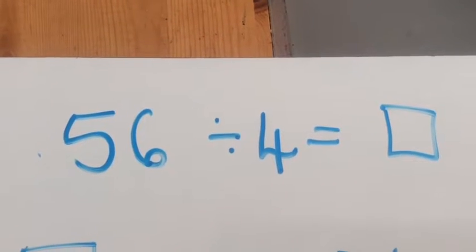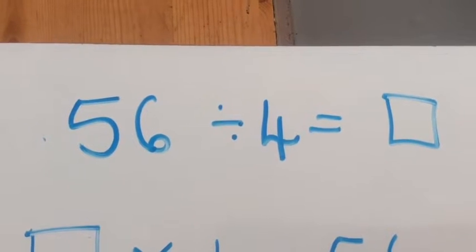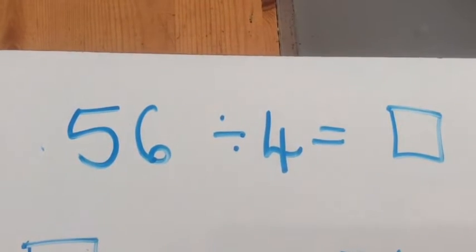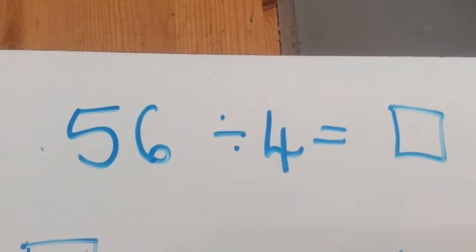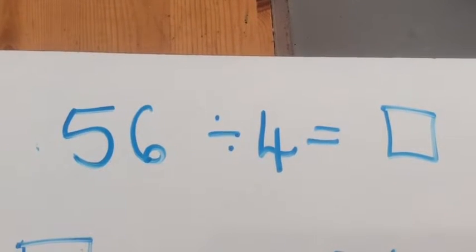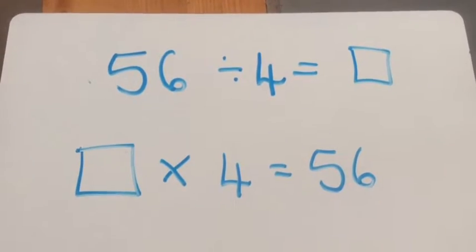Let's do some more dividing now using that chunking method with your big jump first and then your smaller jump. What multiplication factor are we going to use to work out this division sum? That's right. How many fours make 56?